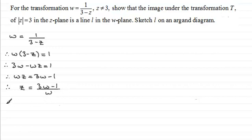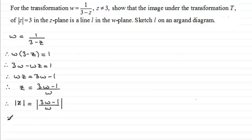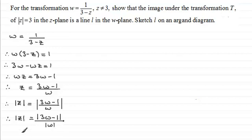Taking the modulus of both sides, we get the modulus of Z equals the modulus of 3W minus 1 divided by W. When we have a division inside a modulus, it's the same as taking the modulus of the top and bottom separately, so that's the modulus of 3W minus 1 divided by the modulus of W. Multiplying both sides by the modulus of W gives: modulus of Z times modulus of W equals modulus of 3W minus 1.